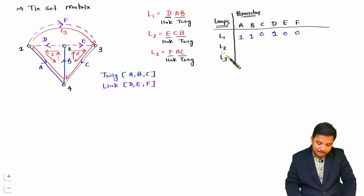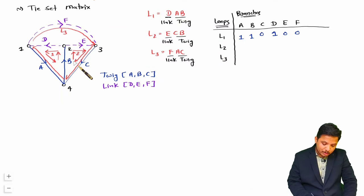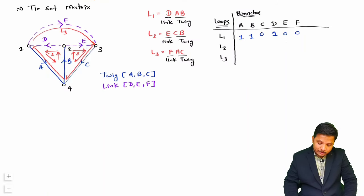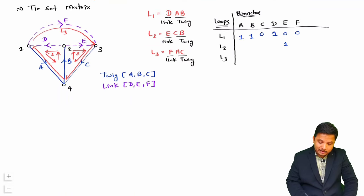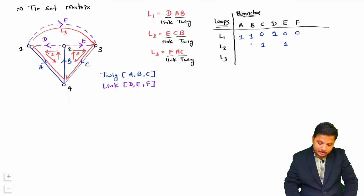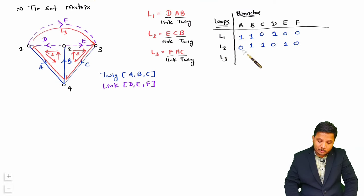For loop L2: E is in the direction of the loop so E gets plus 1; C is in the direction of the loop so C gets plus 1; B is also in the direction of loop L2 so B gets plus 1; and A, D, F are not connected with loop L2 so those are 0.